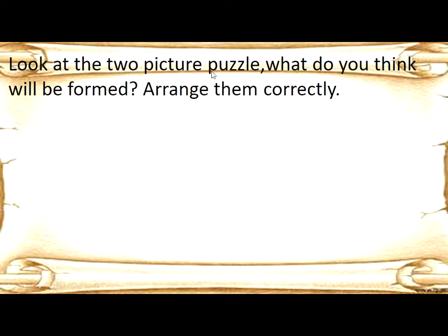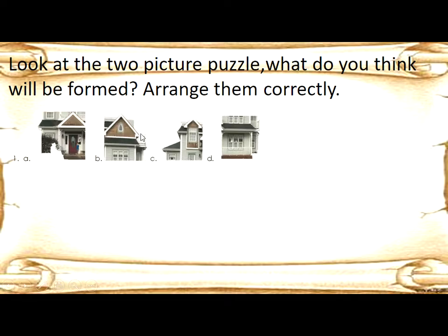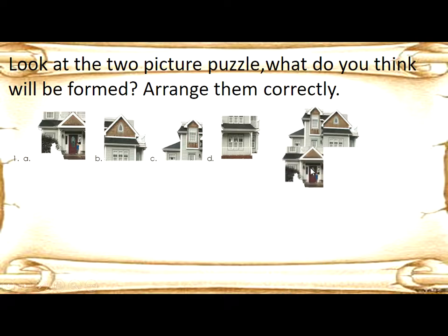Look at the two-picture puzzle. What do you think will be formed? Arrange them correctly. Write number one. The letters are C, B, A, and D. This is a house.